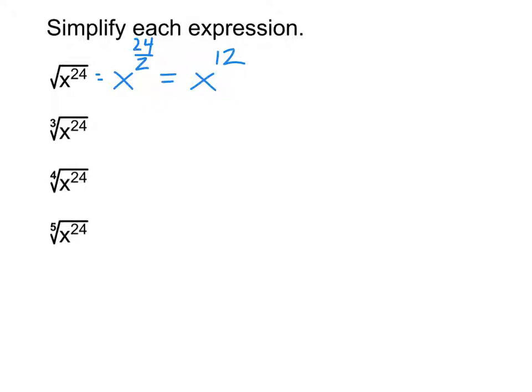All right, for the second one, same basic process. So I start by writing it as x to the 24 over 3 this time. And then 24 thirds reduces. That's just going to be x to the power of 8.